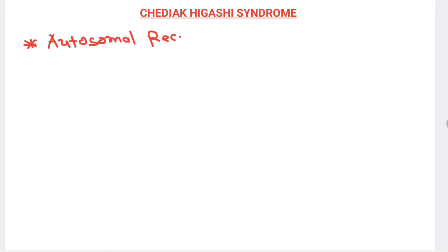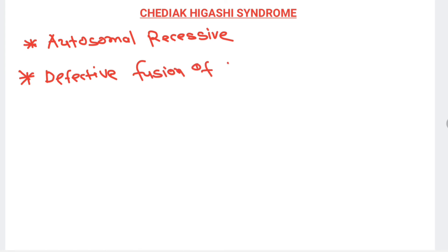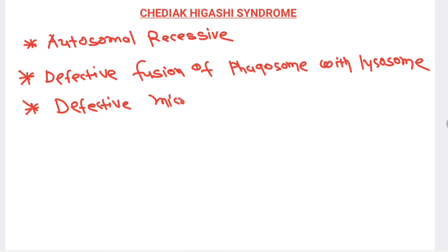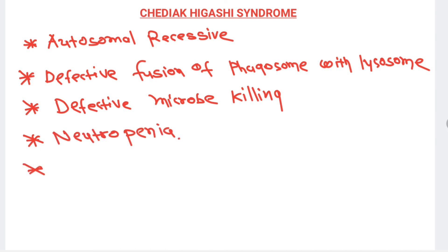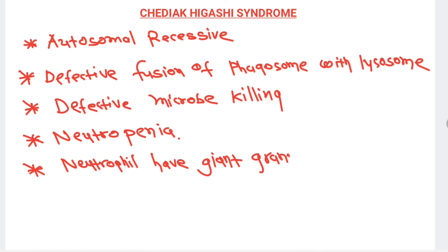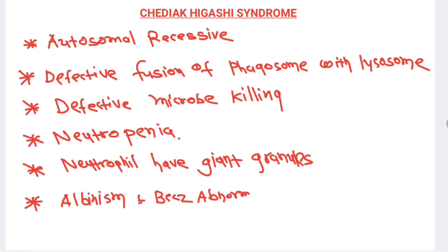Chédiak-Higashi syndrome is an autosomal recessive disorder in which there is defective fusion of the phagosome with the lysosome. If the phagosome does not fuse with the lysosome, lysosomal granules cannot be released, resulting in defective microbial killing and increased susceptibility to infection. Patients have neutropenia, neutrophils with giant granules, albinism due to melanocyte abnormality, and possible bleeding disorders. The associated gene is LYST.